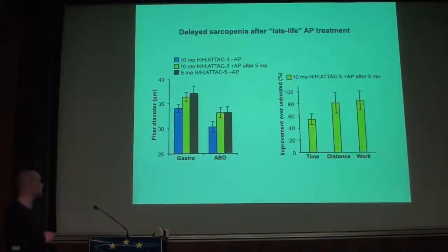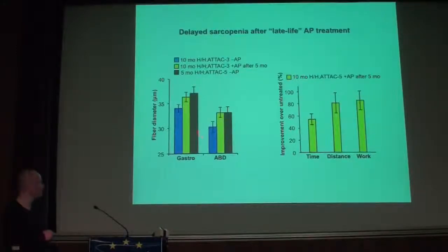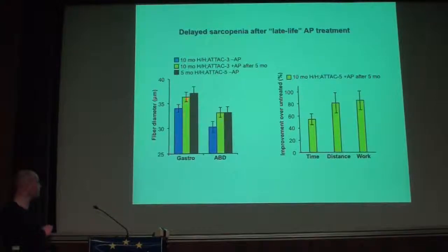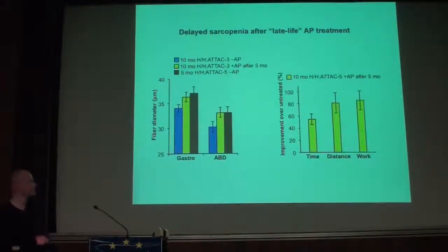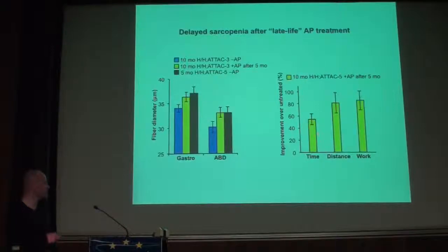We did similar measurements — muscle fiber diameter and treadmill experiments. The black bars represent animals at five months of age at the start of the experiment, and yellow bars represent animals at ten months after five months of treatment. There is still a delay in muscle fiber loss in the gastrocnemius and abdominal muscles, and treated animals still run better in time, distance, and work output compared to untreated animals.